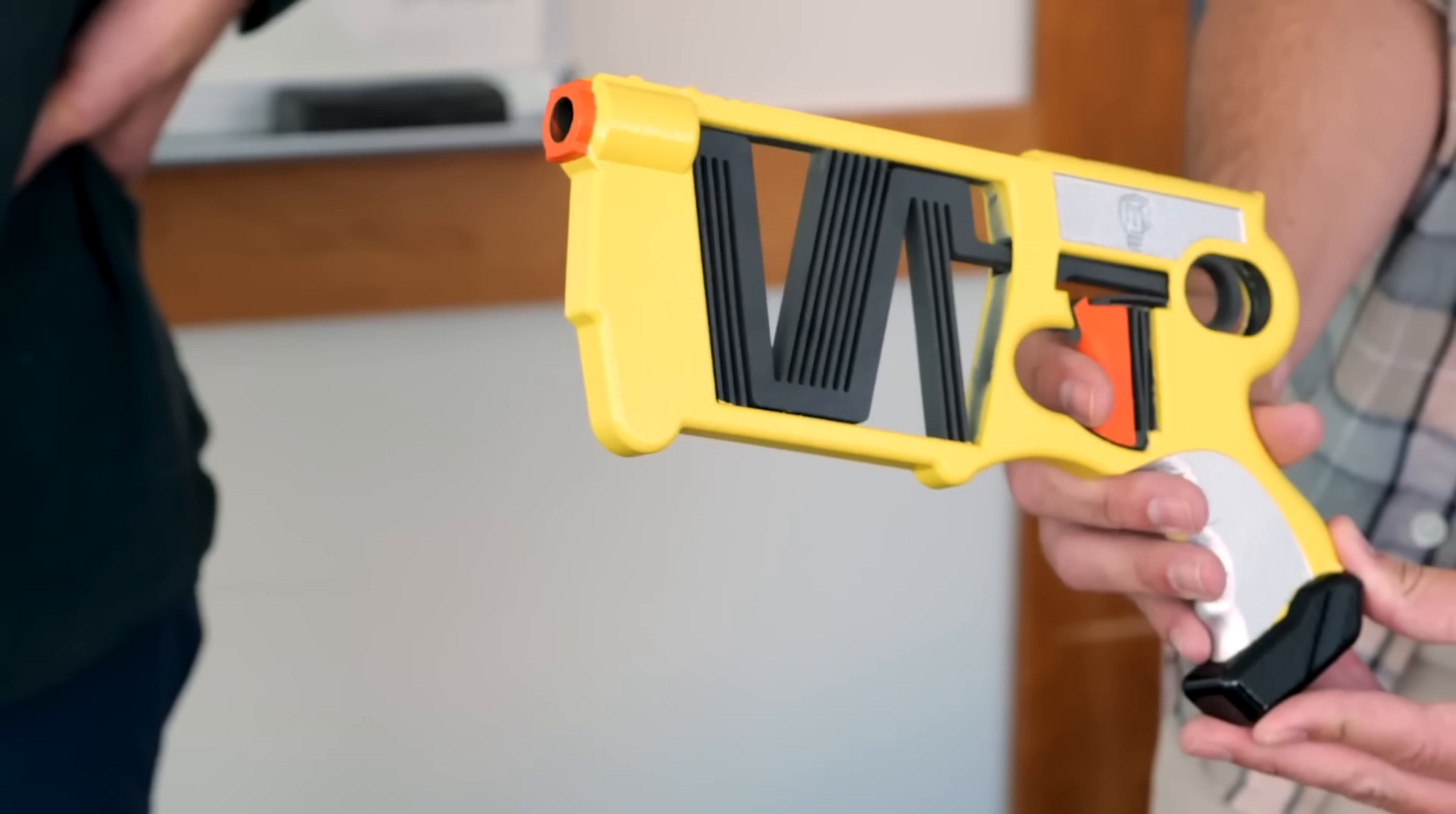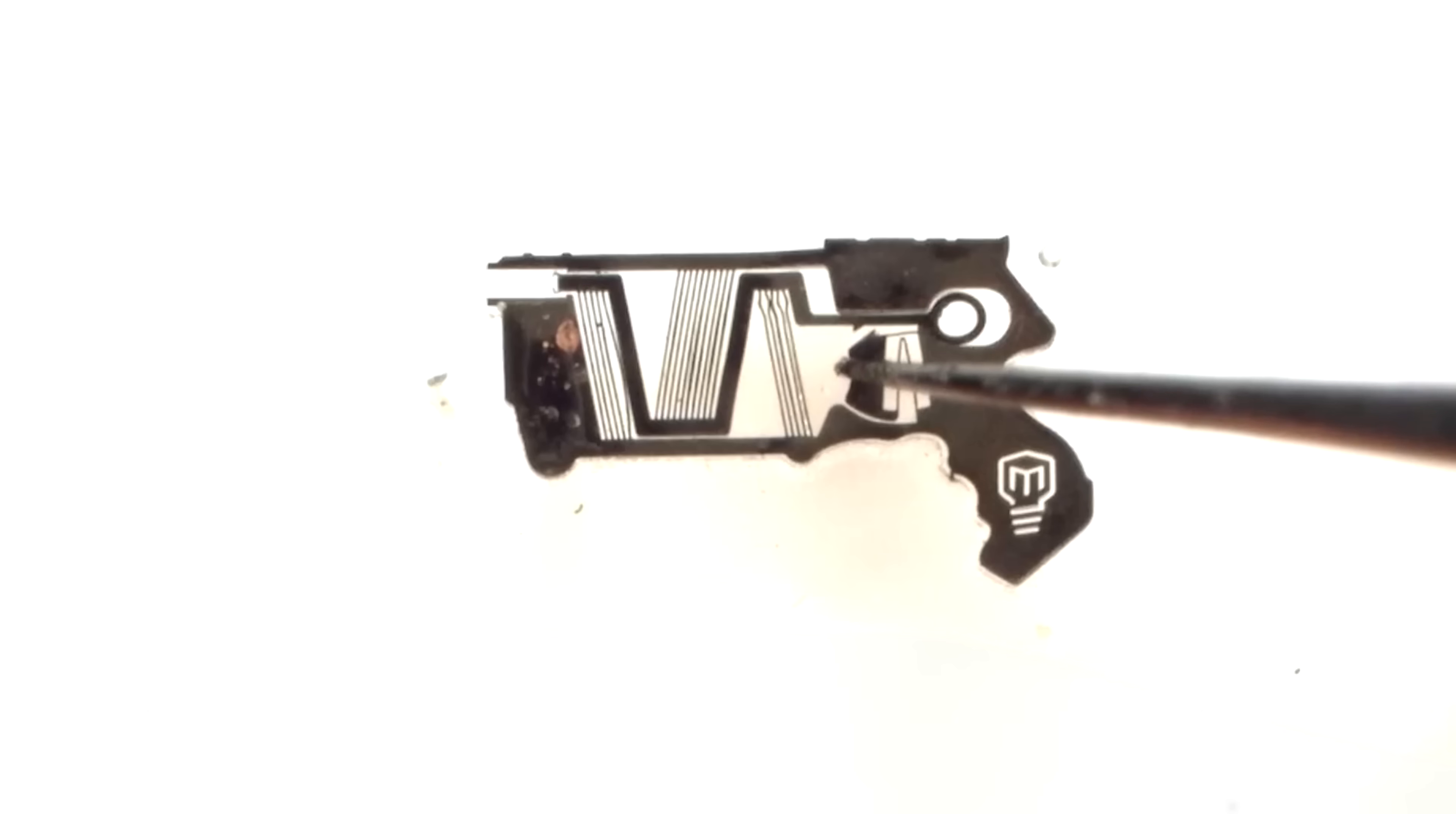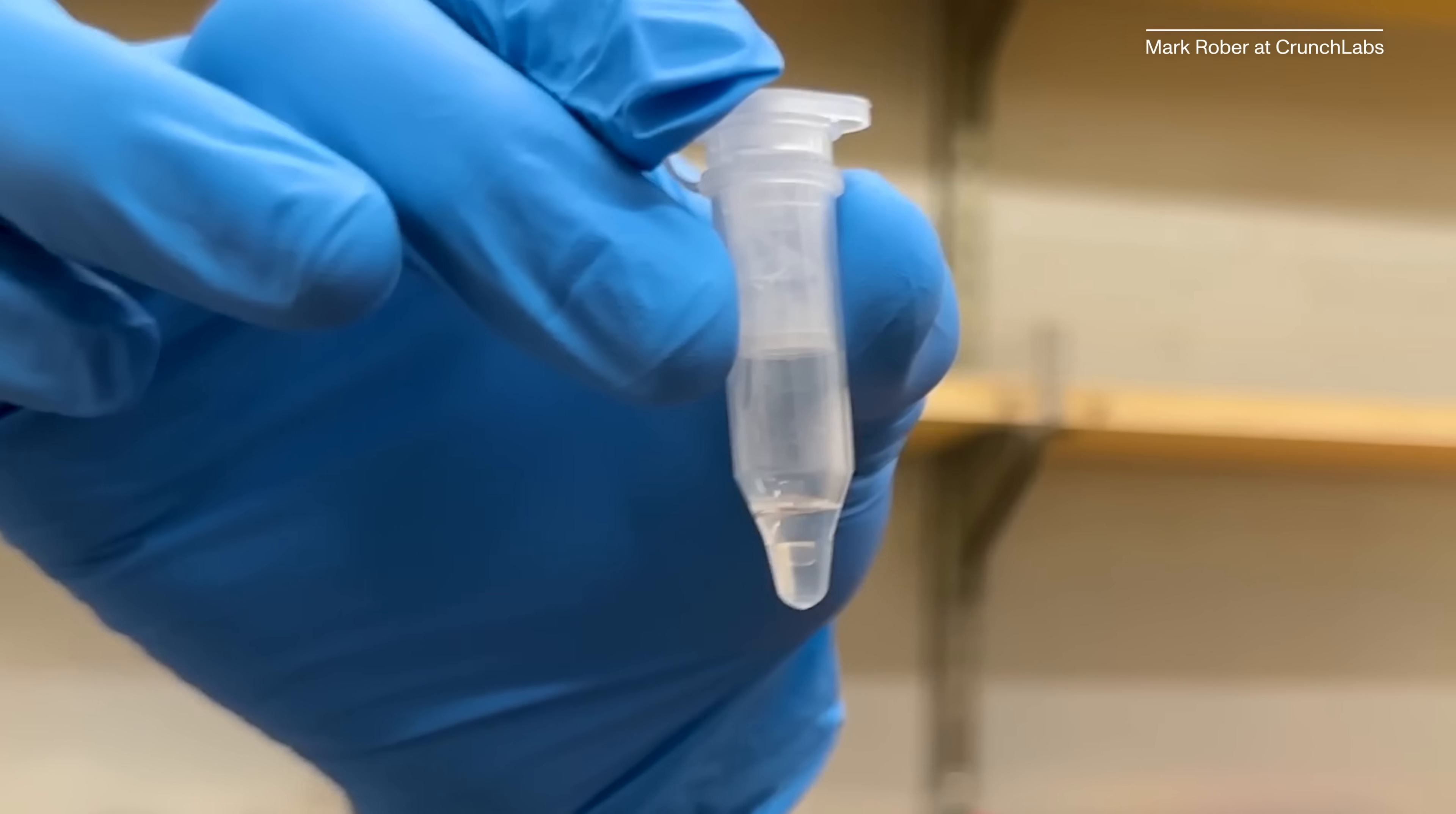It's smaller than the actual wavelength of light. Light can't even bounce off it to come back to your eye. When Mark Rober set out to make the world's smallest nerf gun, he didn't know it would lead to this.